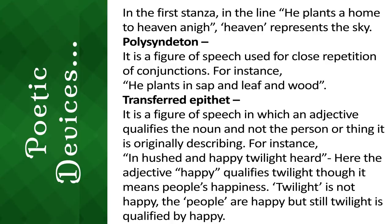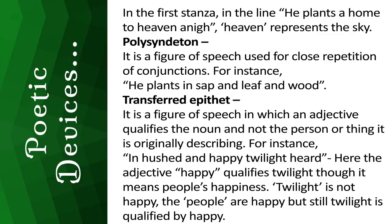Transferred Epithet is a figure of speech in which an adjective qualifies a noun that is not the person or thing it is originally describing. For instance, in the phrase 'In a hushed and happy twilight heard,' the adjective 'happy' qualifies 'twilight,' though it actually means people's happiness. Twilight is not happy — the people are happy — but still twilight is qualified by 'happy.'